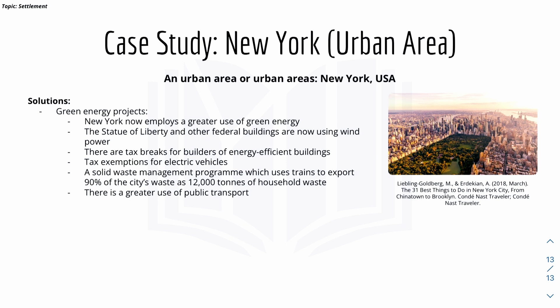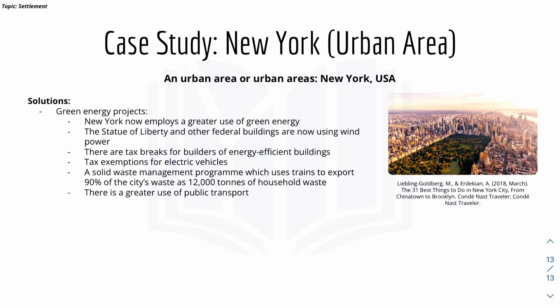Solutions to problems in New York City include green energy projects — New York is now employing greater use of renewable energy, for example the Statue of Liberty and other federal buildings now use wind power. There are also tax breaks for builders of energy-efficient buildings and tax exemptions for electric vehicles. A solid waste management program uses trains to export 90% of the city's waste — around 12,000 tons of household waste. Greater use of public transport will reduce the number of vehicles in the city, hopefully decreasing traffic congestion and raising quality of living.